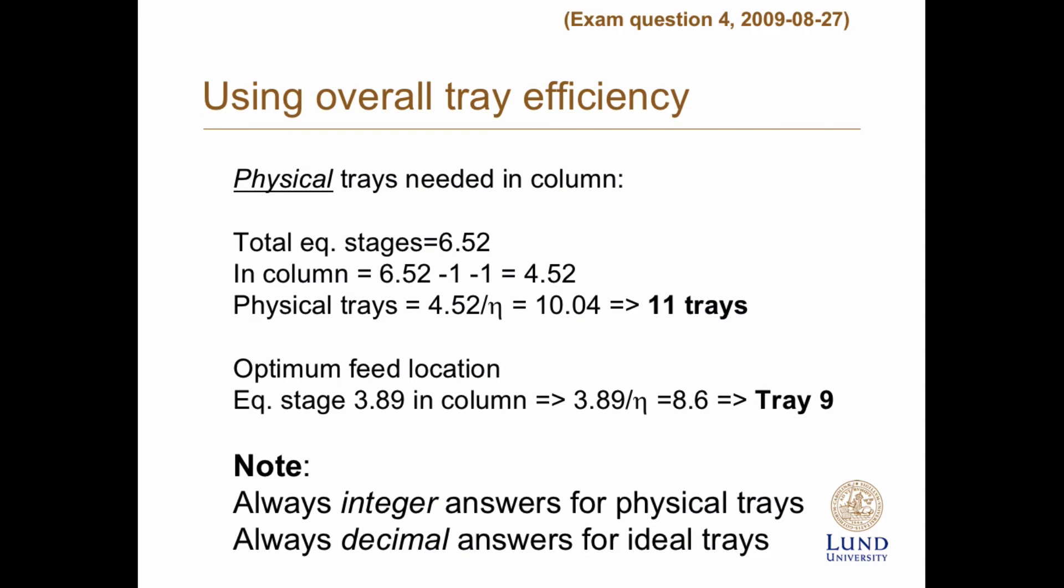Using overall tray efficiency, the physical trays needed in the column, we have totally 6.52, but we need to take away both the partial condenser and the reboiler. So we get 4.52 equilibrium stages in the column. And to get the physical trays, we need to divide that with the overall tray efficiency, 0.45 and we get 10.04. But 10 won't be enough. So we need one more. So we say 11. Always round up.